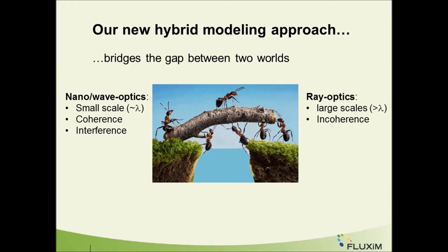Therefore, the approach chosen at Fluxim is to couple the nano-optic physics of the oscillating dipole — coming from the recombination of a hole and an electron — with ray optics for the light propagation in incoherent layers.